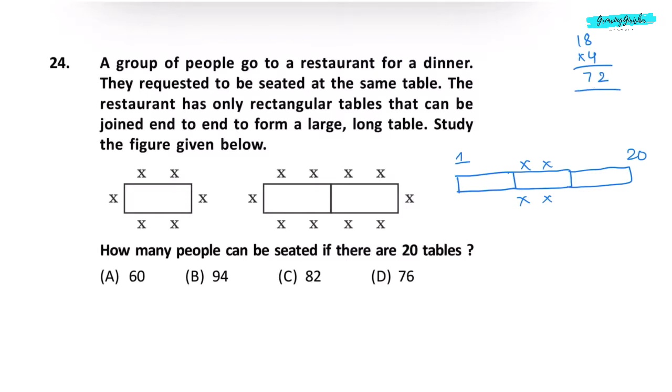If this is the first table and this is the 20th table, that means 18 tables are kept between the first and the 20th. So 18 tables and on one table, four people are sitting. 18 times 4 is 72. And if you count the remaining two tables, 5 people, another 5 people. 10 people are sitting on the remaining two tables. So we'll add 10 to 72. We get 82. So 82 people can be seated if there are 20 tables. Correct answer is option C.